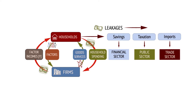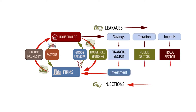While these leakages make the economy smaller, injections into the circular flow make the economy bigger. As firms produce, machinery wears out or better technology becomes available. Firms may borrow to spend on these capital goods, creating investment, which is an injection into the circular flow. Government spending on merit goods and public goods is a further injection, along with overseas spending on a country's exports.